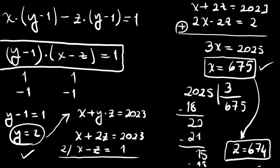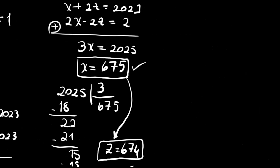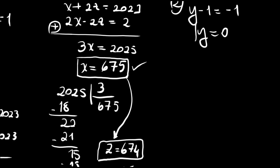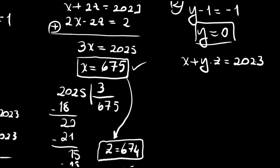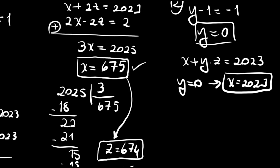Now the second possibility: y minus 1 equals minus 1, so y equals 0. Substituting y equals 0 into x plus y times z equals 2023 gives x equals 2023. Similarly, substituting into x times y plus z equals 2024 gives z equals 2024.